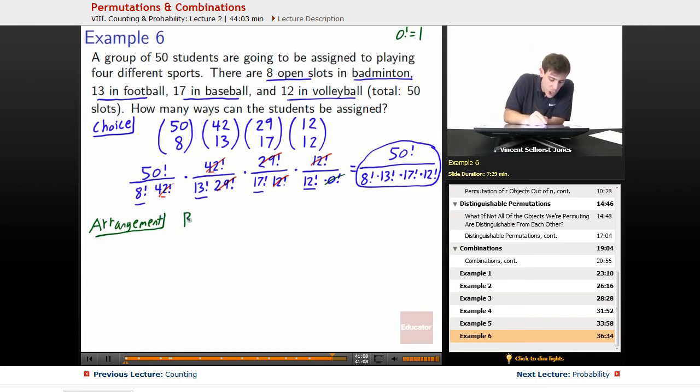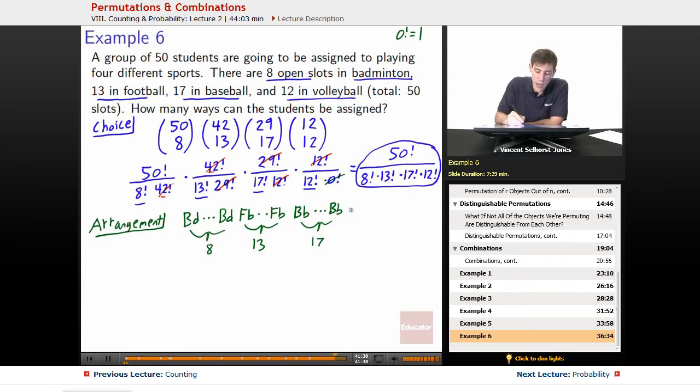So there is a badminton card, and we have a total of eight badminton cards. Let's make that BD because it's kind of hard to tell the difference between badminton and baseball. And then we've got our football cards. How many football cards? We've got 13 football cards. How many baseball cards? We've got 17 baseball cards. And we've got 12 volleyball cards. So we can think of this as these cards.